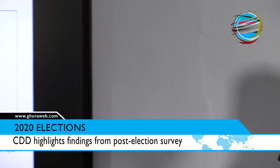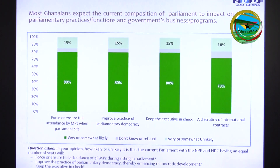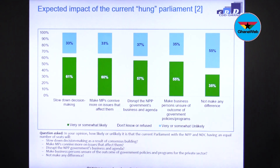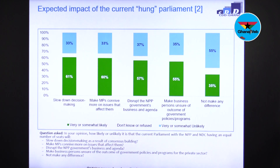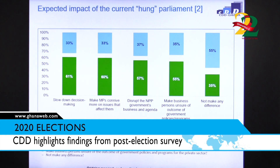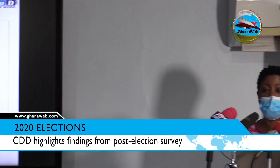Still on the expected hung parliament: we see a drop in the view that it will slow decision-making. About 6 in 10 say it will make MPs connive more on issues that affect them. The figures drop further when it comes to disrupting the NPP government's business and agenda — Ghanaians don't strongly believe that will happen. Additionally, 33% say they do not know what difference the hung parliament makes.